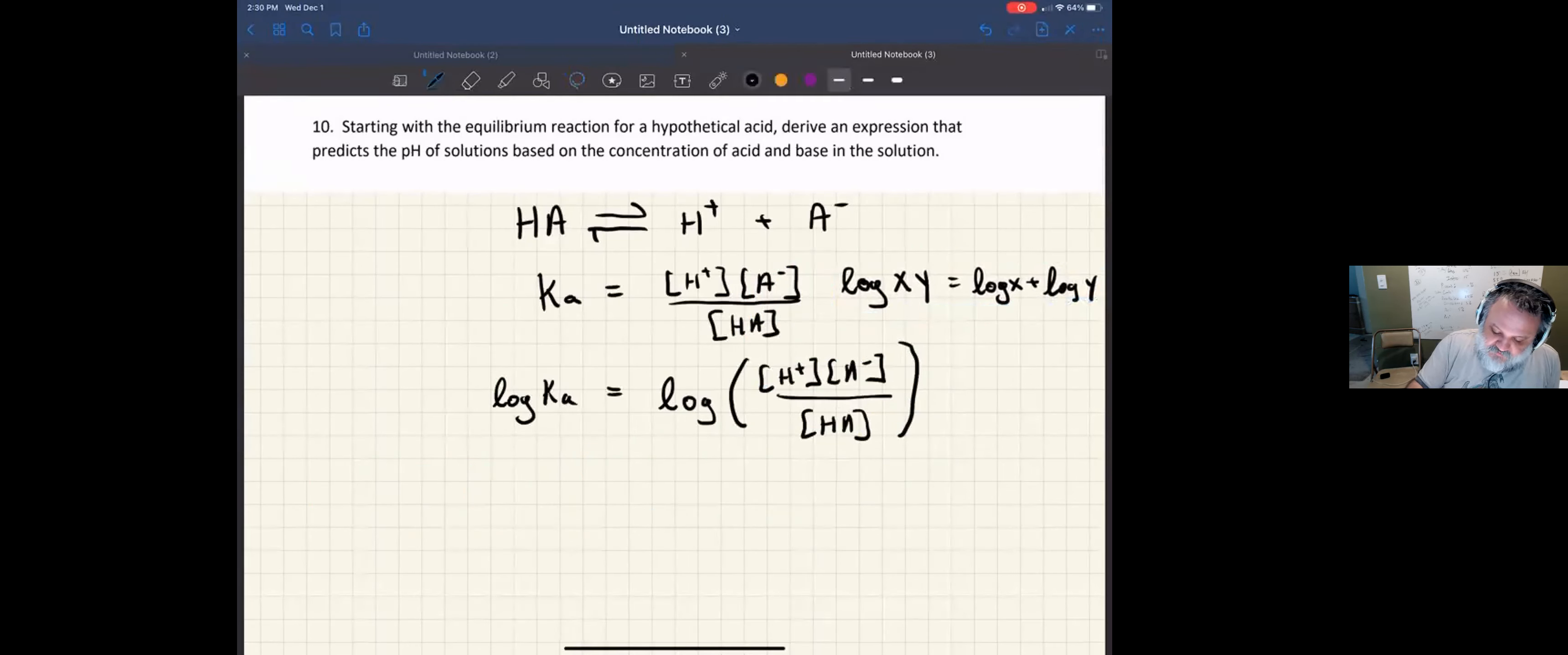And so what we need is an X and a Y. And so here's my X, here's my Y, and I need to do the same thing with the expression from the equilibrium. Well, let's call this X and this Y, right? Because algebraically, H plus times the ratio is the same thing as H plus times A minus over HA. And so now what I can do is I can separate that out, and I can write log of Ka equals log of H plus plus the log of A minus over HA.